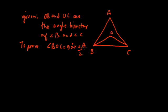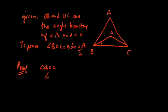We have to prove that angle BOC equals 90 degrees plus half of angle A. To prove this, consider triangle BOC. In triangle BOC, as OB is the angle bisector of angle B, angle OBC is half of angle B.